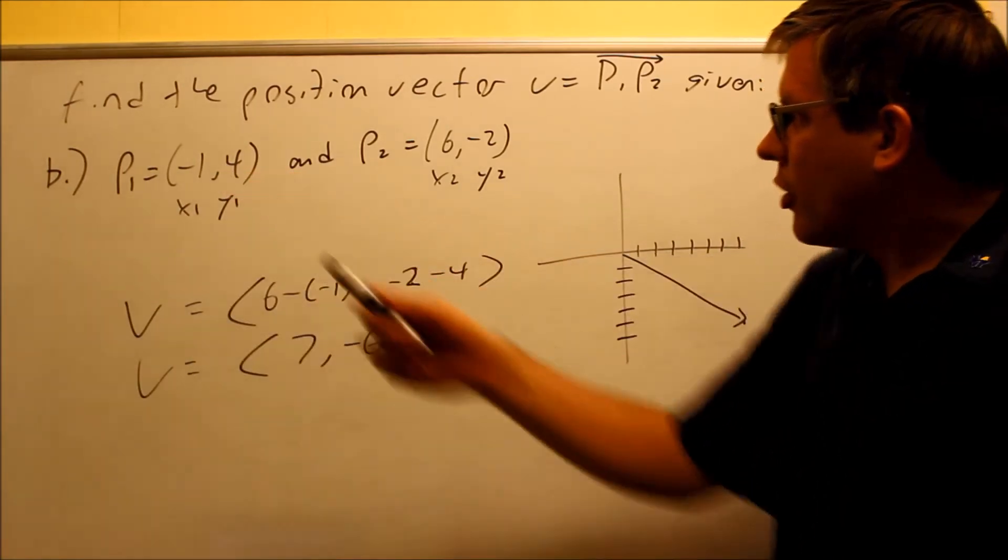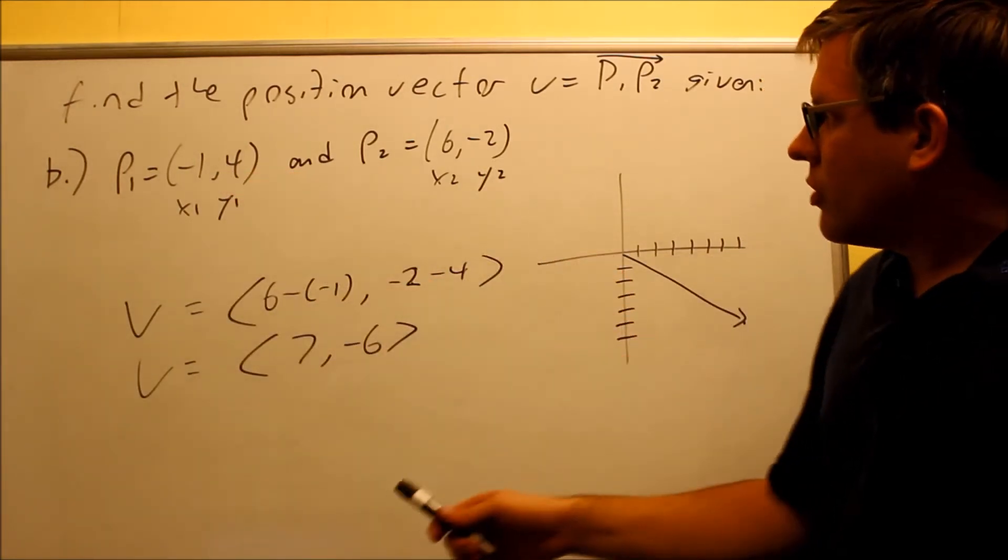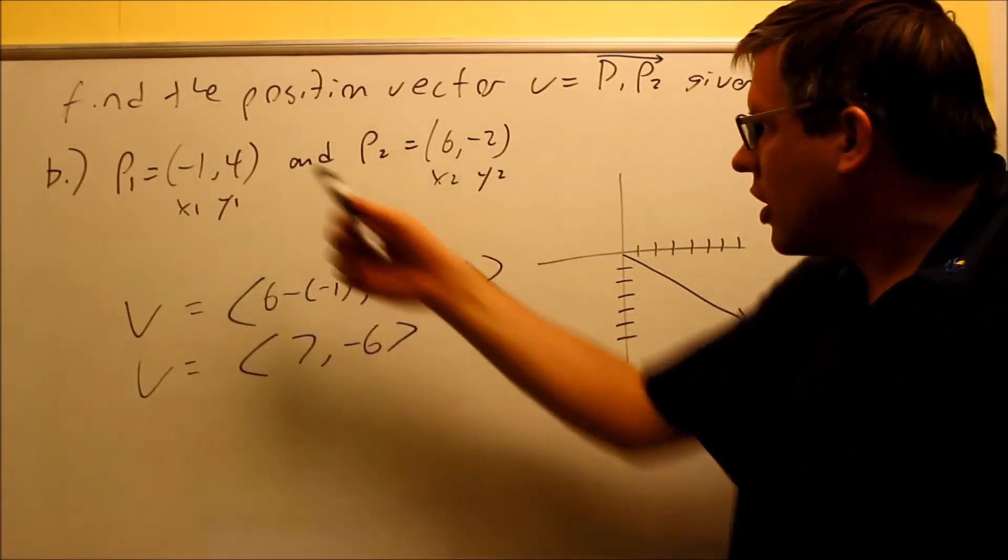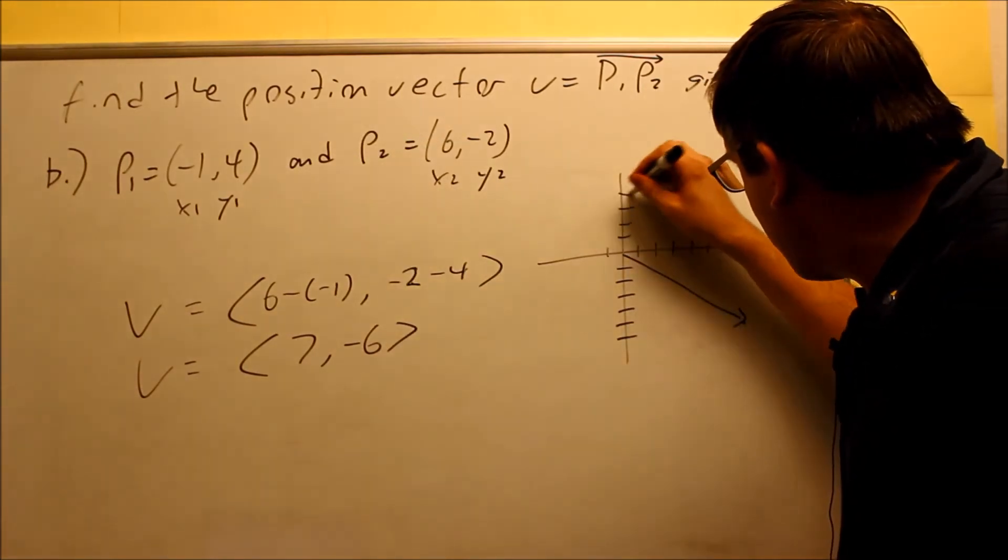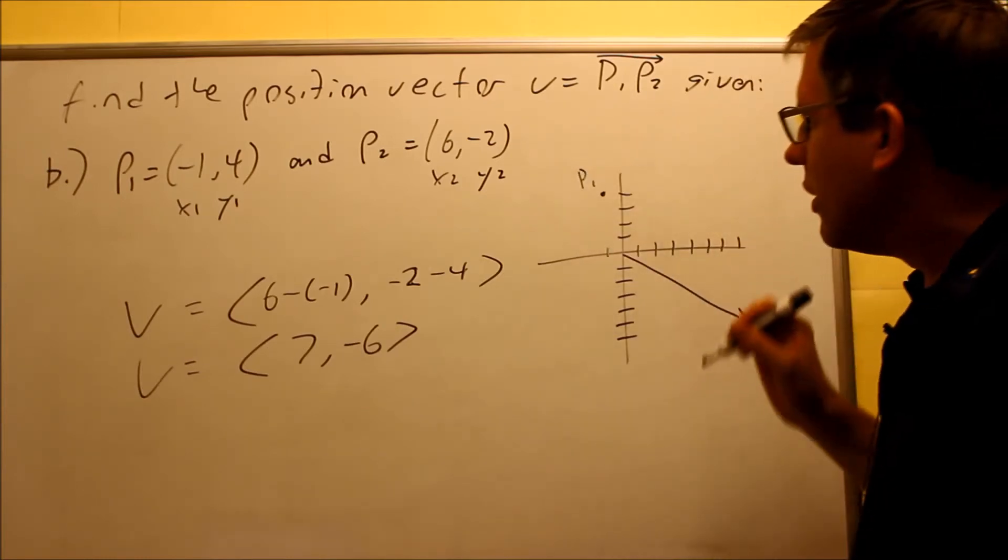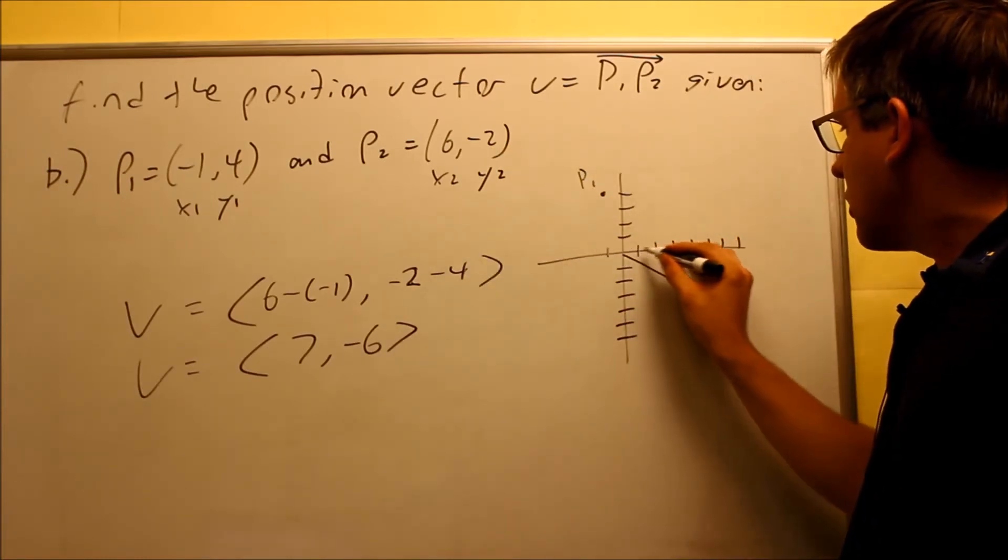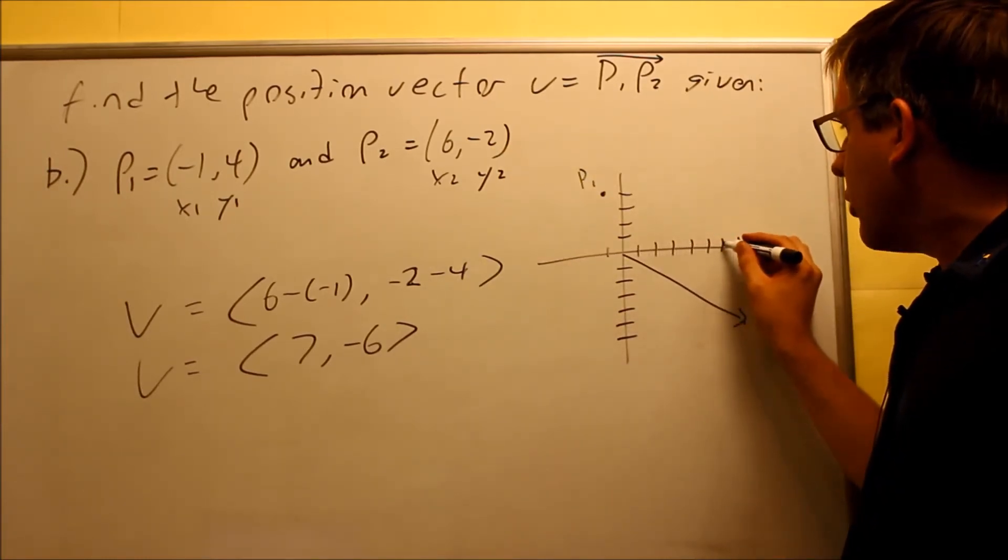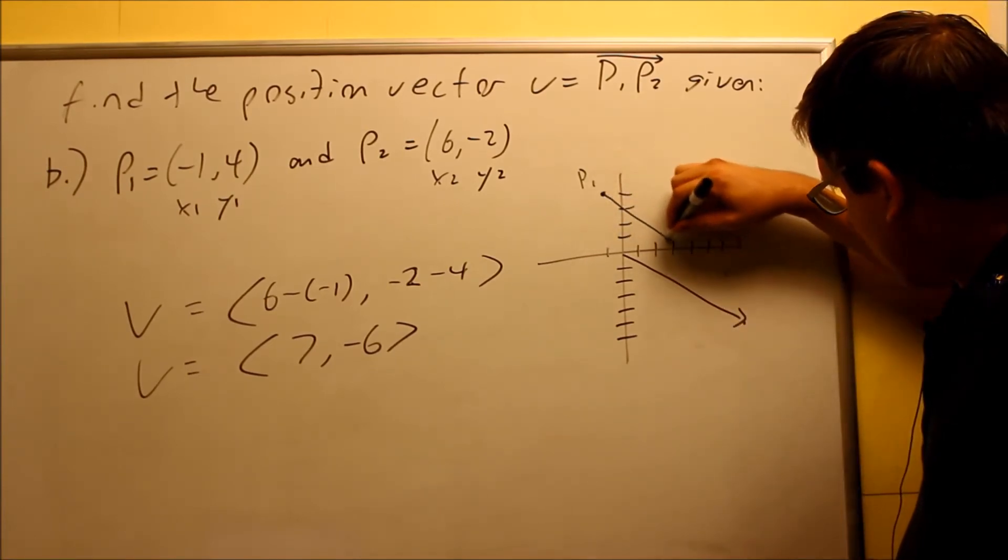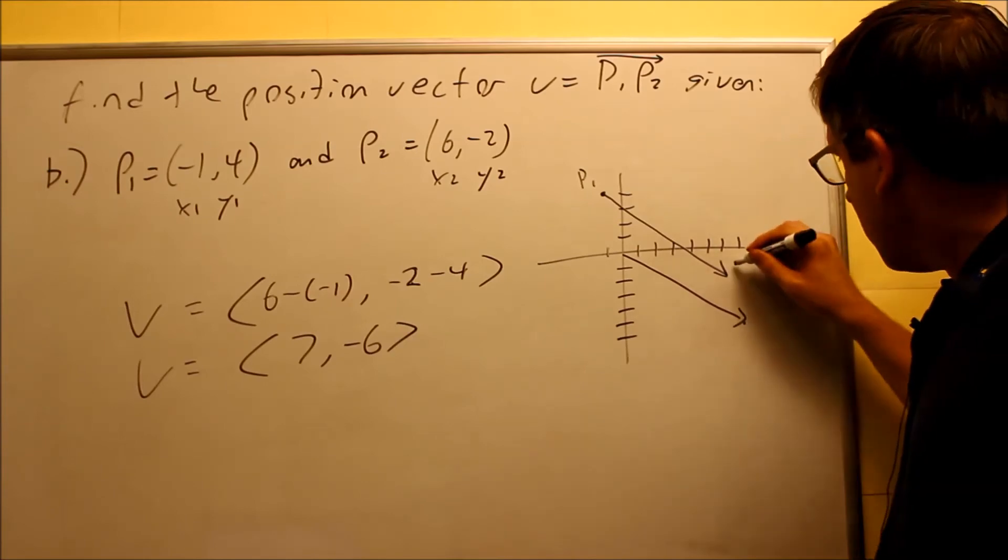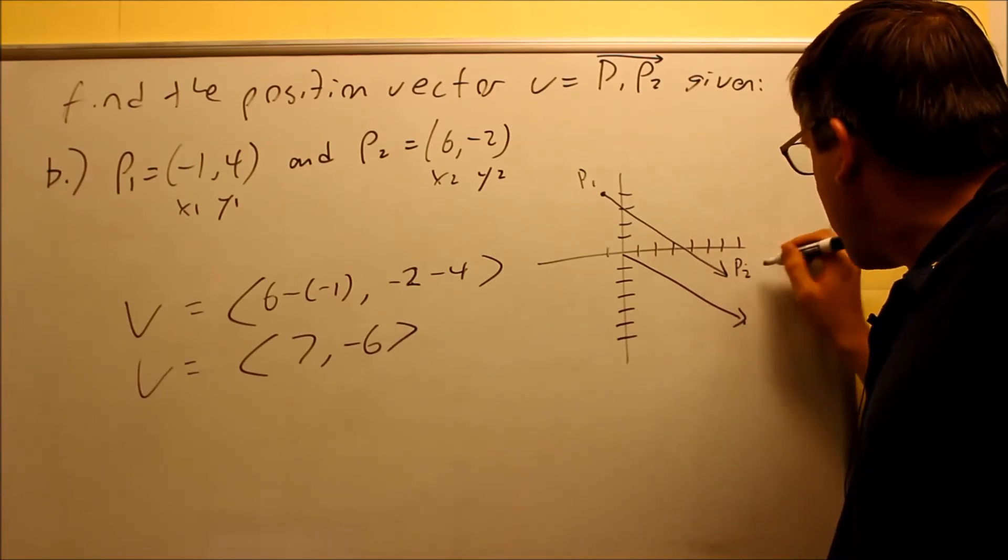So remember, whatever the starting point is, whatever the ending point is, that's important. So originally it was drawn there. Now if I have negative 1, 4, here's my original starting point. That's my P1. My P2 was 6 and I'm going to go down 2 would be here. So notice P1 is always the starting point. P2 is the ending point right here.